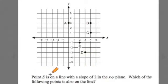It says point E is on a line with a slope of 2 in the xy plane. Which of the following points is also on that line? We know where E is, it's located right here. It's talking about slope of 2. So maybe it's a good time to take a quick moment and talk about slope.